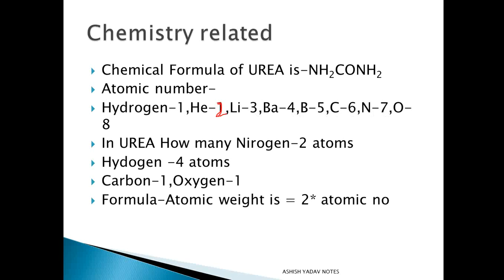In urea, how many nitrogen atoms are there? There are two atoms. And hydrogen atoms, there are four atoms. And how many carbon? One. And how many oxygen? One.